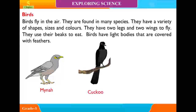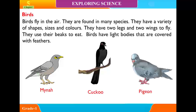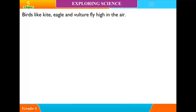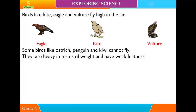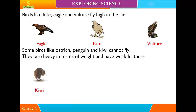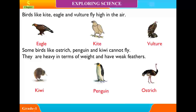Examples of birds include Miner, Cuckoo and Pigeon. Birds like Kite, Eagle and Vulture fly high in the air. Some birds like Ostrich, Penguin and Kiwi cannot fly. They are heavy in terms of weight and have weak feathers.